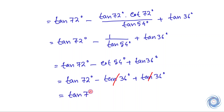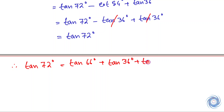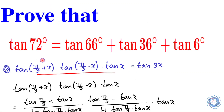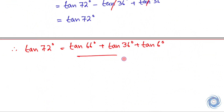And this implies, so finally we have tan 72 degrees. Here we are supposed to prove this equality and finally we have this result, so we are done. Thank you.